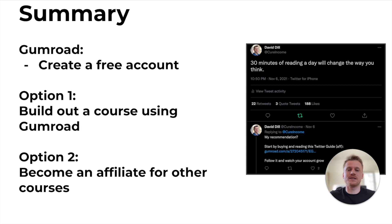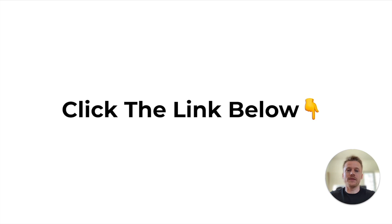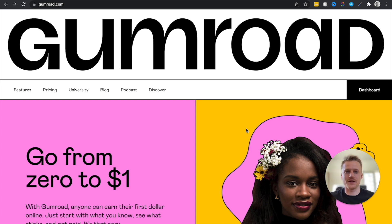To summarize: start by creating your free Gumroad account — no monthly charge, just a fee percentage taken from each sale. Next, either build out a course and launch it to your audience, or become an affiliate for other Gumroad products by messaging the creator after purchasing their product. Use Twitter to promote your course or affiliate products. Check out the link below to learn more about promoting Gumroad products as an affiliate using Twitter, and consider subscribing for more affiliate marketing content.